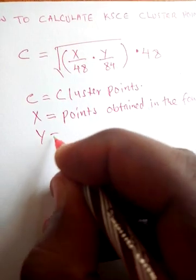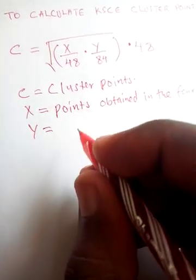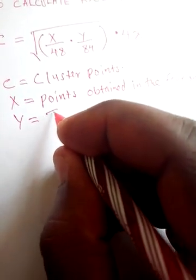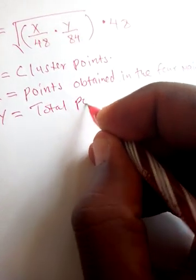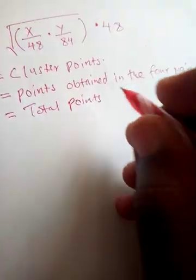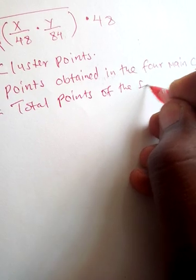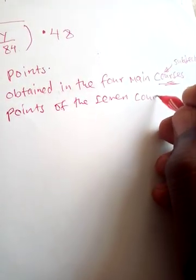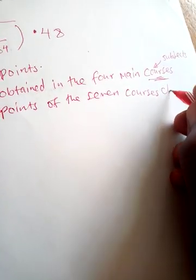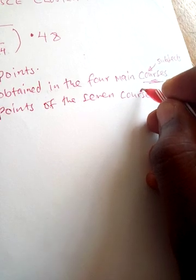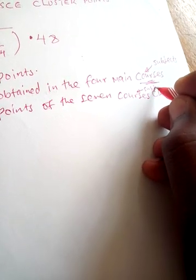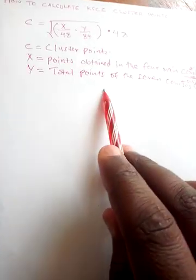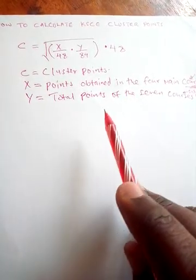Y is the total points of all seven courses or subjects chosen. Now, if we say total points, you need to know how you get a point on a subject.